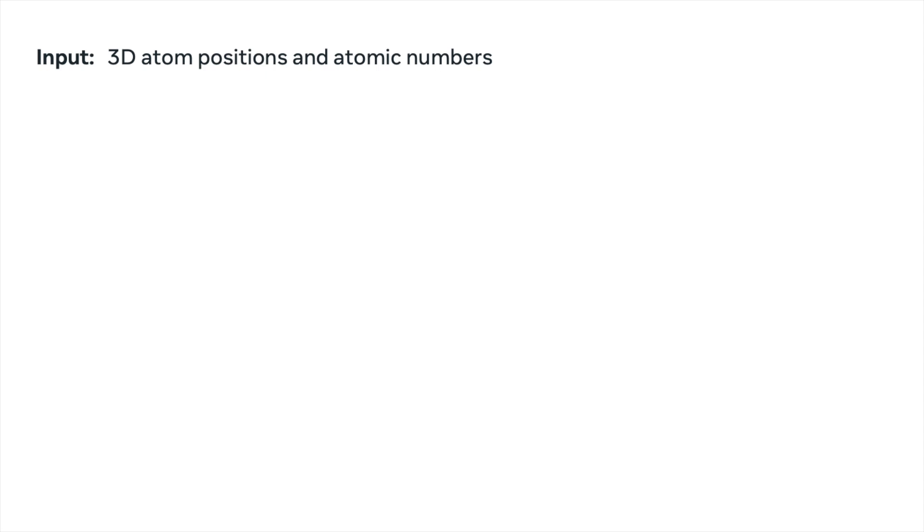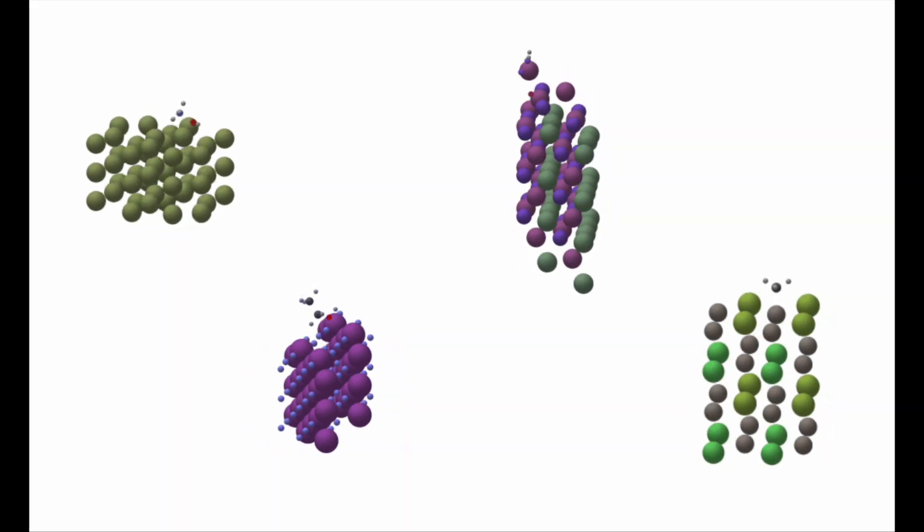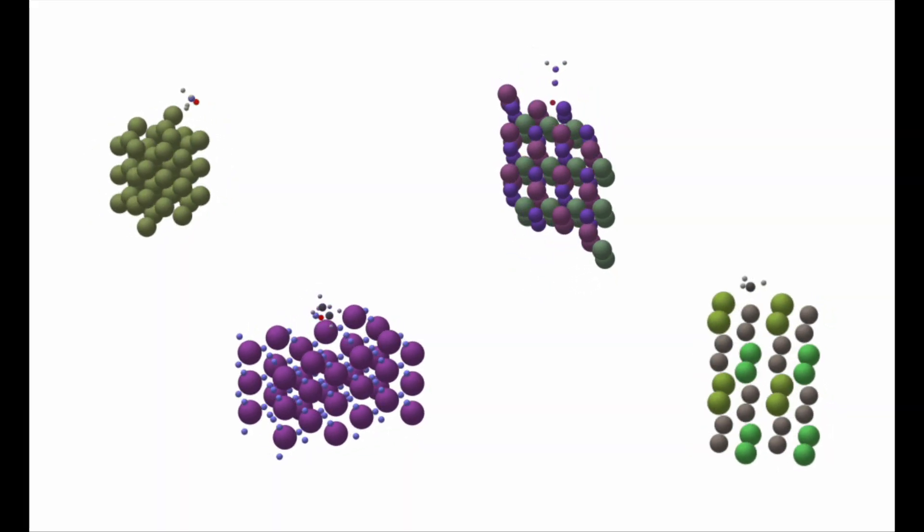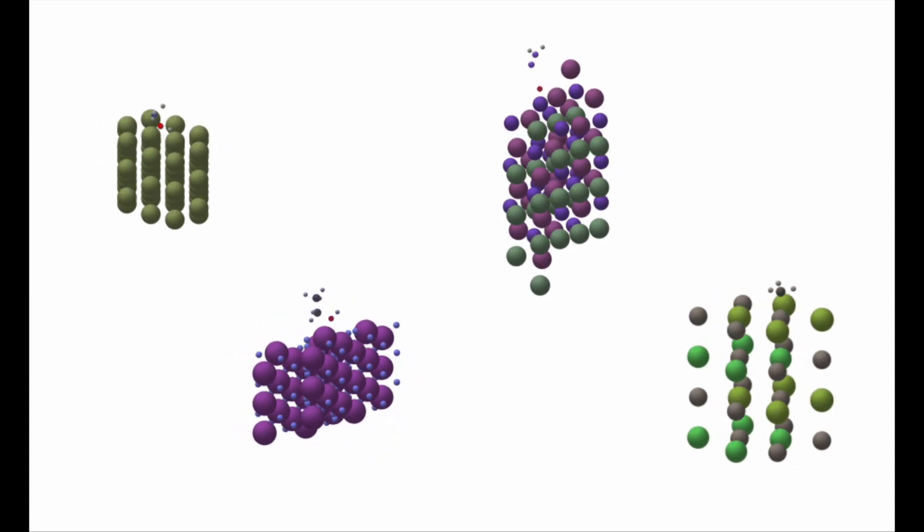So specifically for catalysts, there are two sets of atoms. The first set of atoms are the atoms that are part of the actual catalyst itself. And the second set of atoms are the atoms that are part of the adsorbate. And the adsorbate, again, is just the molecule that is part of the chemical reaction. And here, and a lot of points in this talk, I'm going to be showing you 2D visualizations of the atoms. But just to give you a sense for what they look like in 3D, here are some illustrations of different systems in 3D kind of rotating around.